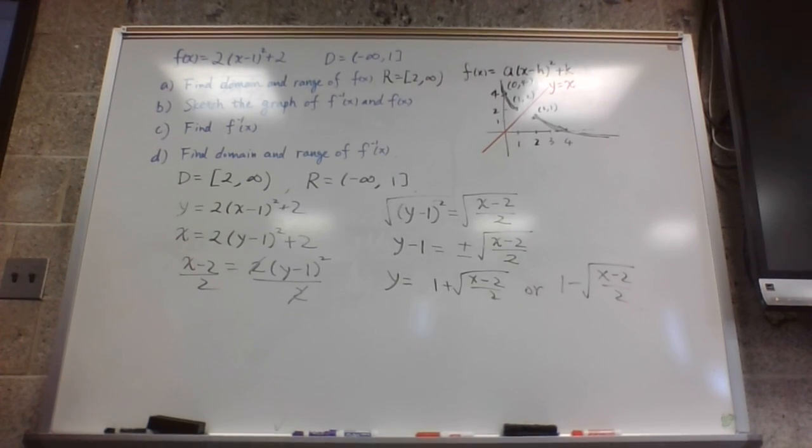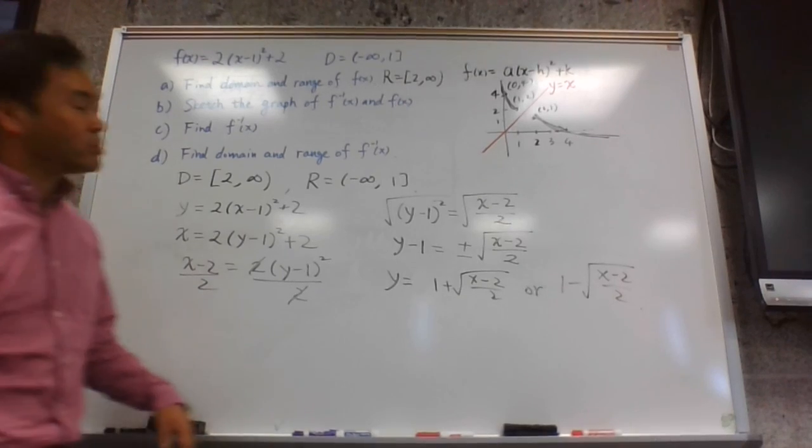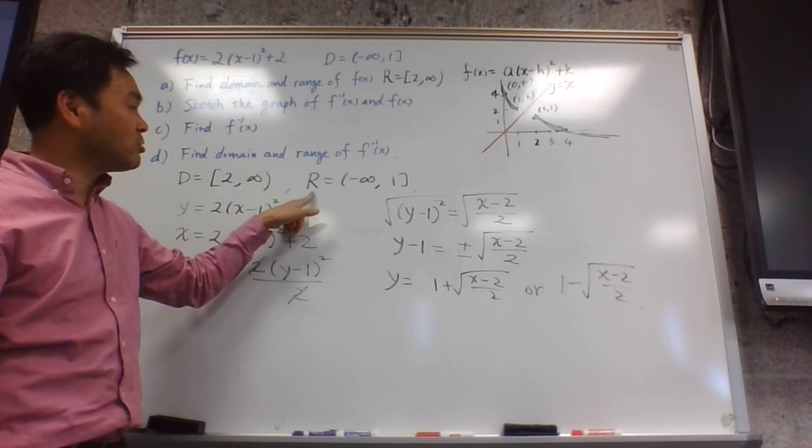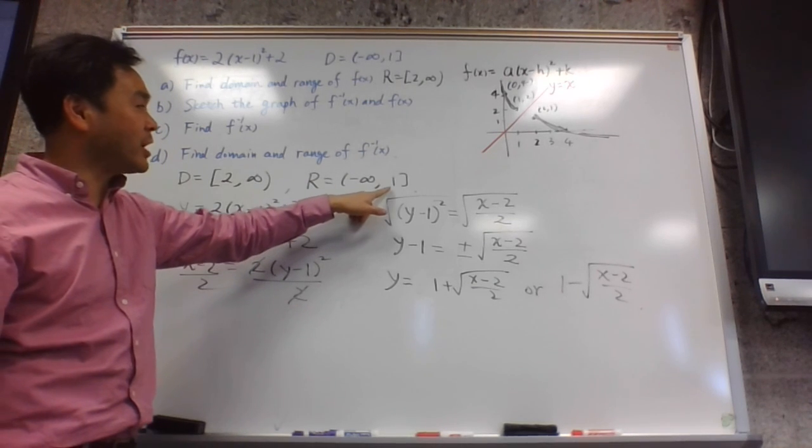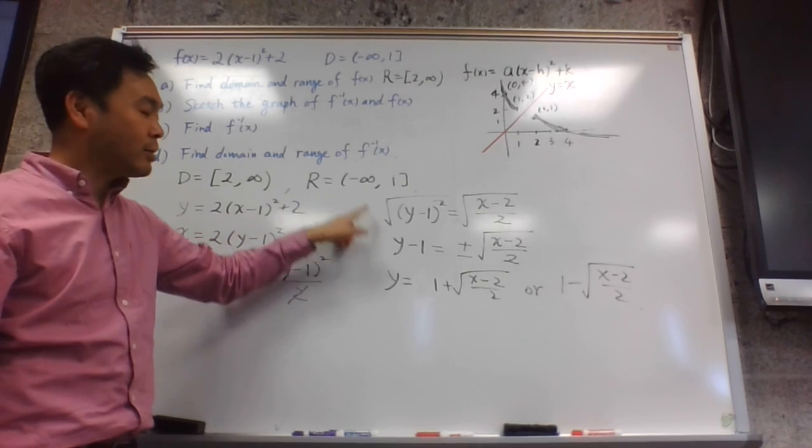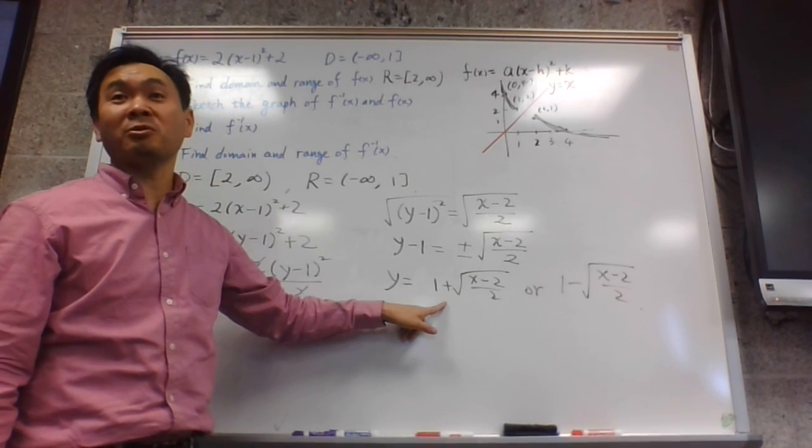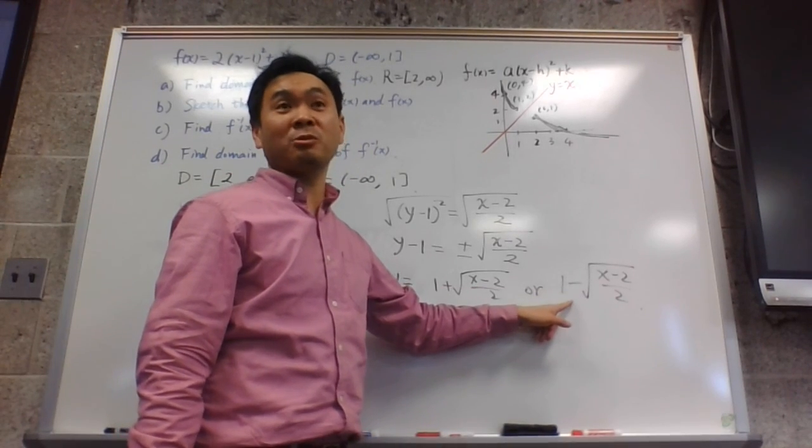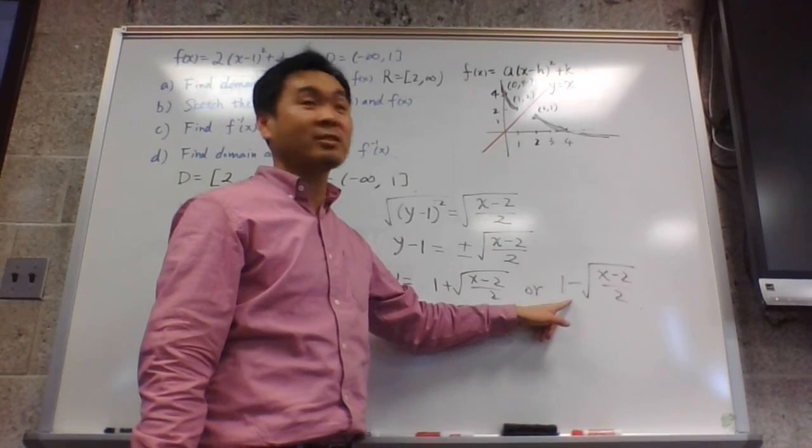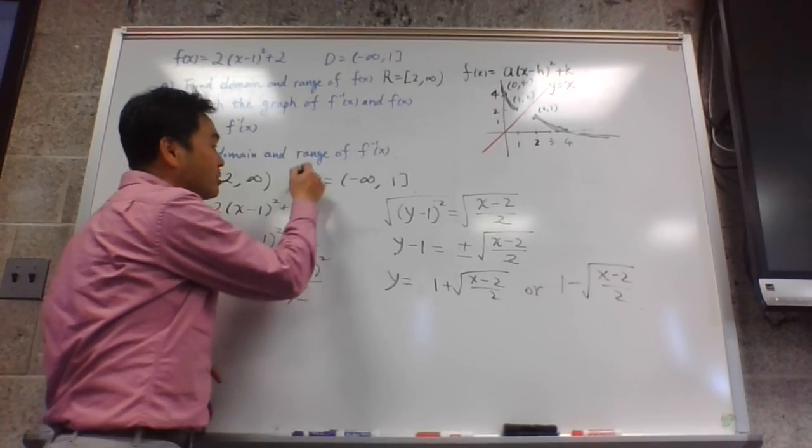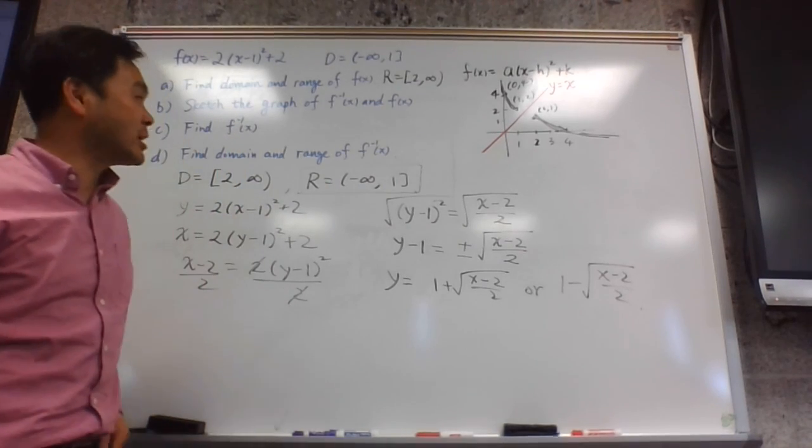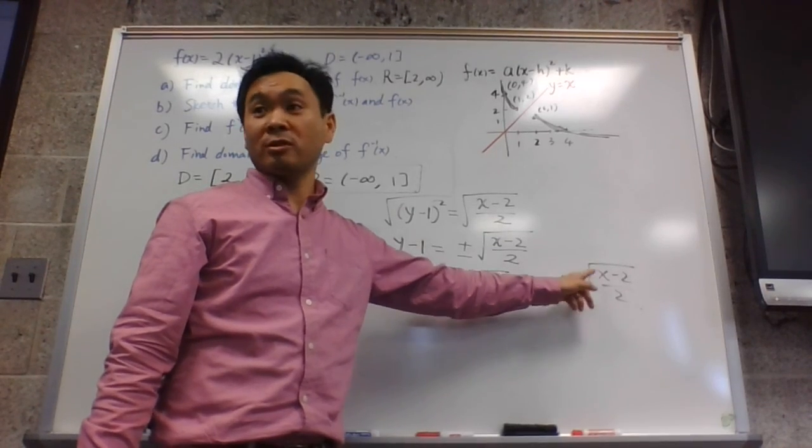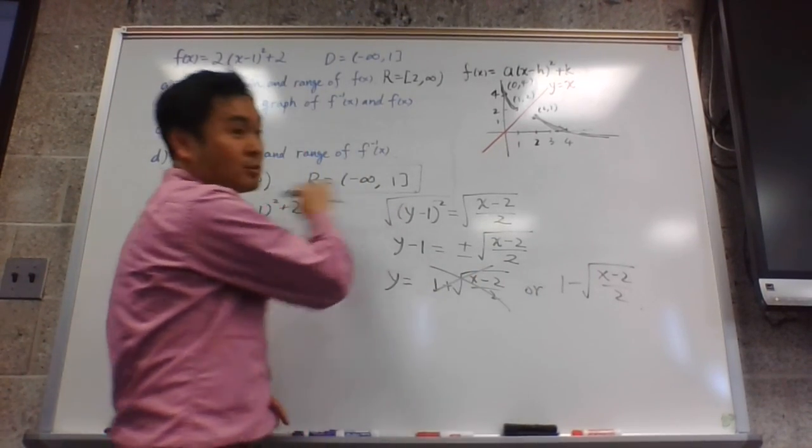And to answer that question, you can either use the graph or you can use the range. Look at the range. The range says that y value can be at most 1 or less. Now if you do 1 plus something, is that less than 1 or greater than 1? Greater. It's more than 1. How about 1 minus something? Is that less than 1 or greater than 1? It's less than. So to be in accordance with our condition that the range should be from negative infinity to 1, which one should we choose? This one. This is a no-go because this is not satisfied.